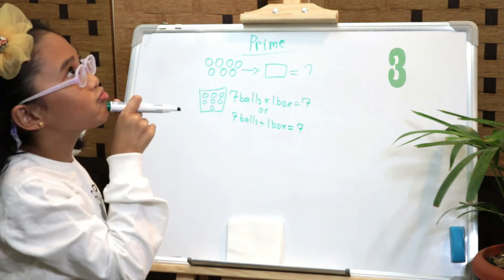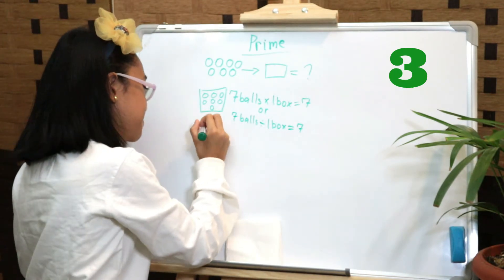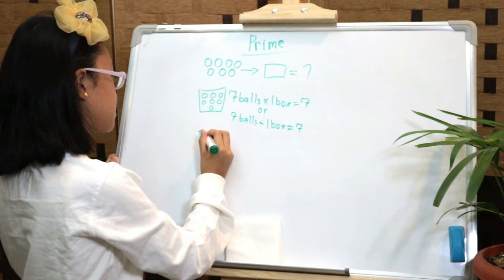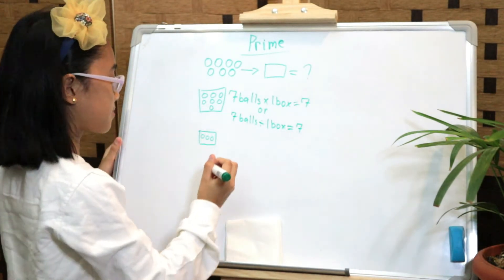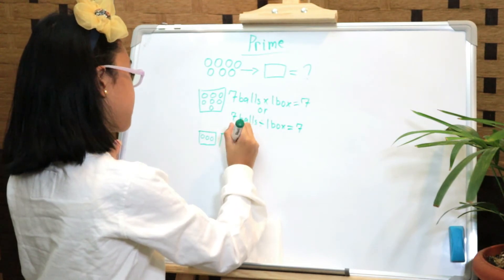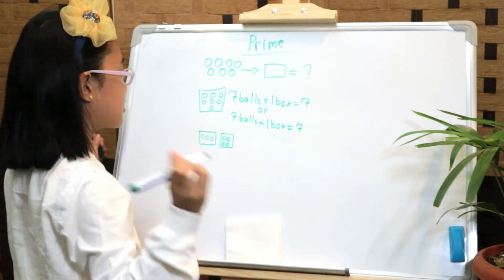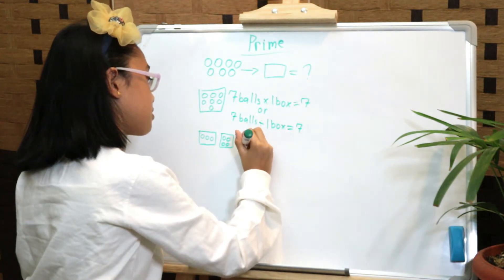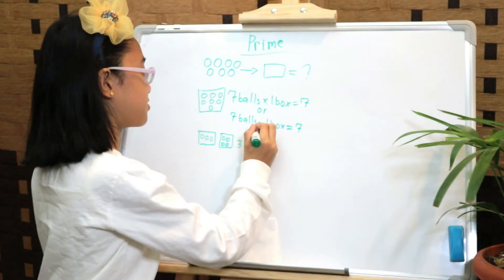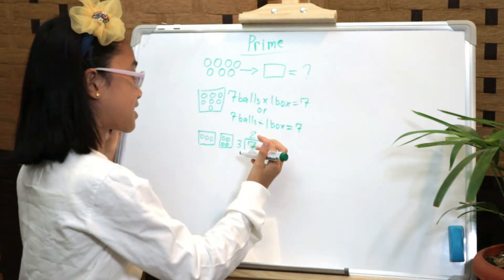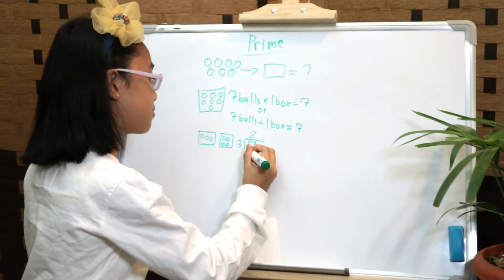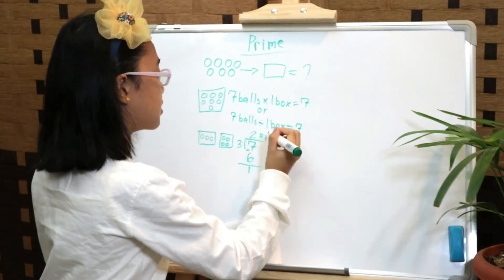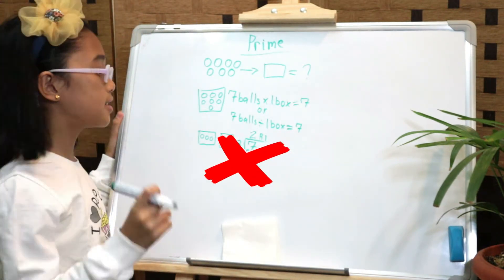Now let's try three. One box: one, two, three — and then four over here, that makes seven. Seven divided by three: two times three is six. Seven minus six is one. The remainder is one, so three is not a factor of seven.